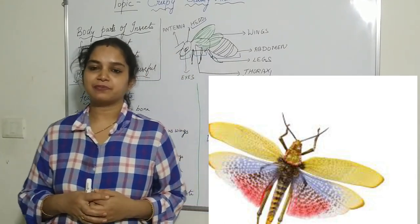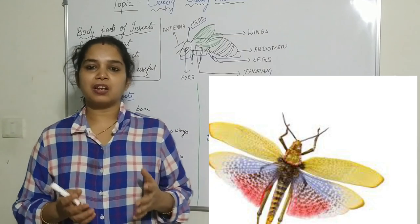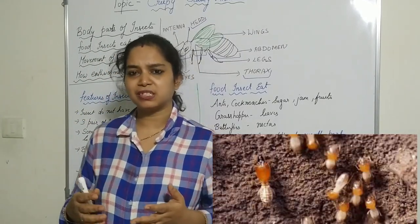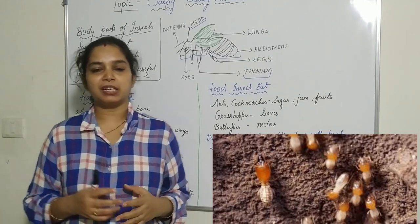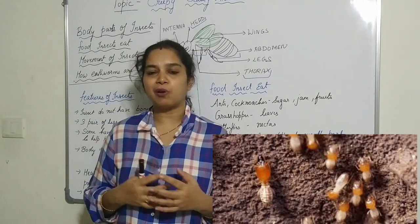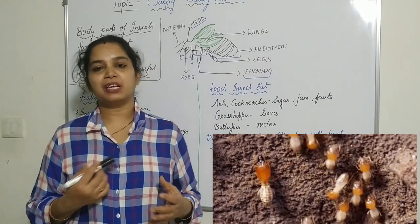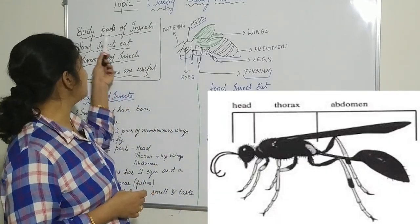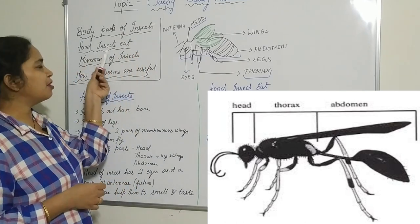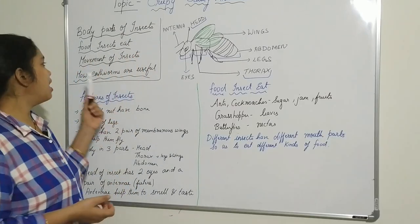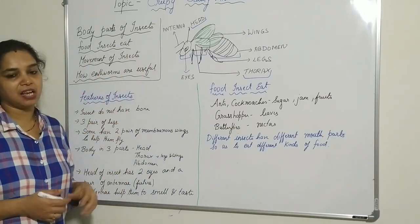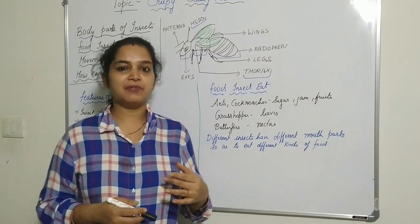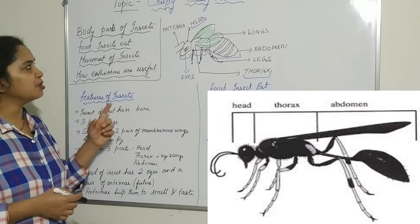There are more than a million different types of insects on Earth. Today we are going to study about the creepy crawly animals — that is, insects. In today's session we are going to discuss the body parts of insects, the food that insects eat, the movement of insects, and how the earthworm is useful to us.